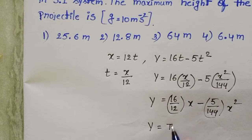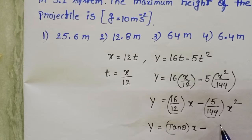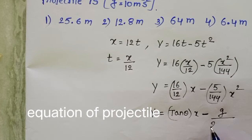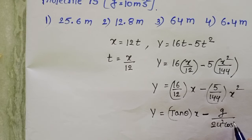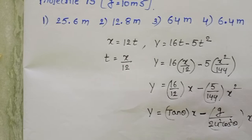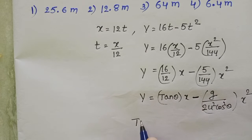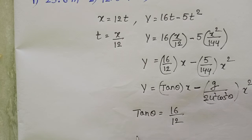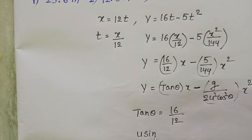Compare this equation y equals tan theta into x minus g by 2u square cos square theta into x square. tan theta equals 16 by 12. In place of tan theta write u sin theta by u cos theta.